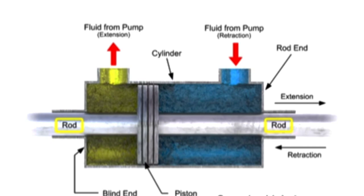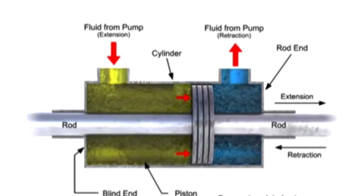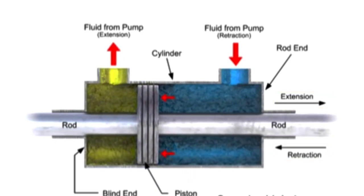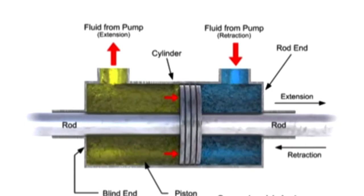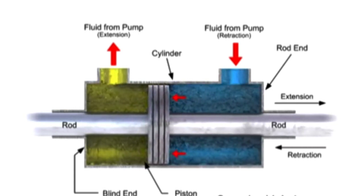They have two rods, both attached to the piston, and each coming through an end cap. Double-ended cylinders work similarly to single-ended, but are used when a constant speed is required for both the extension and retraction strokes. Since the flow rate is the same and the piston areas are the same, the speed for extension and retraction is also the same.